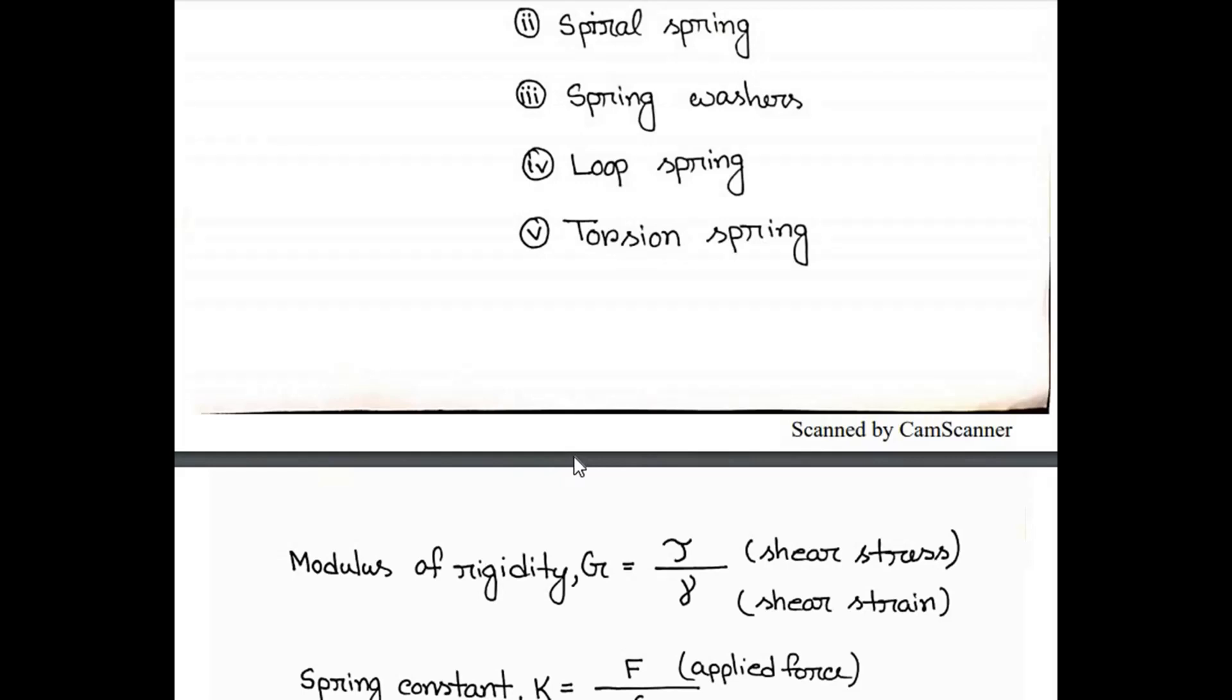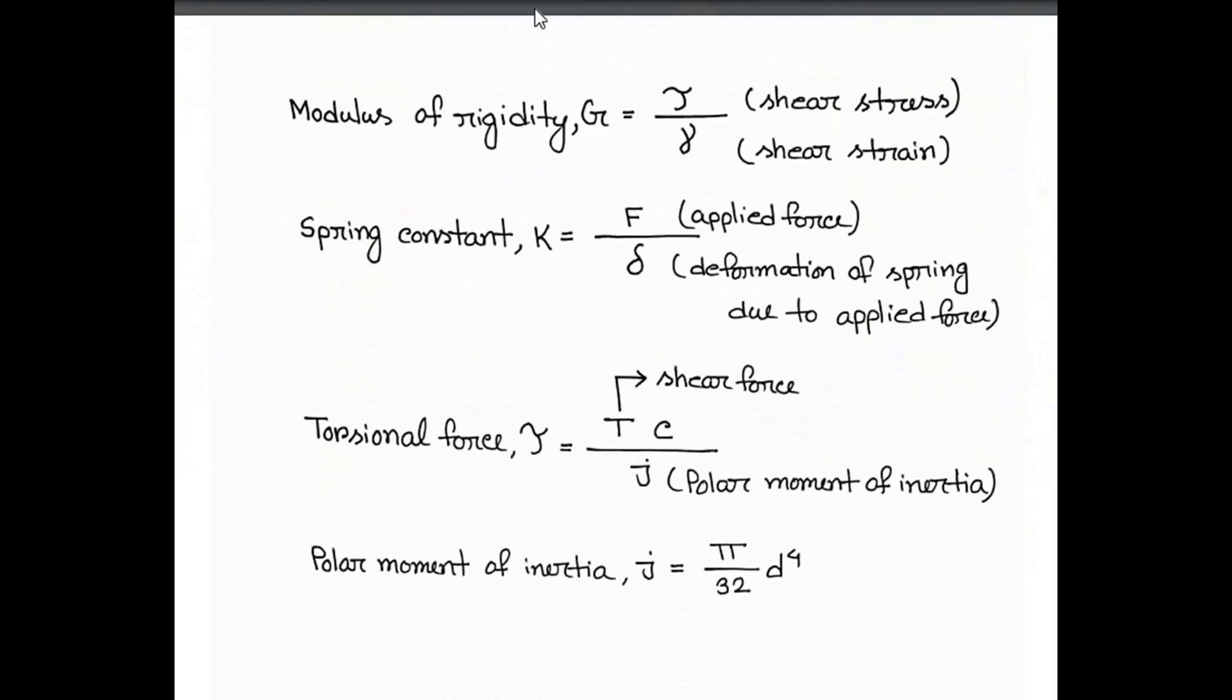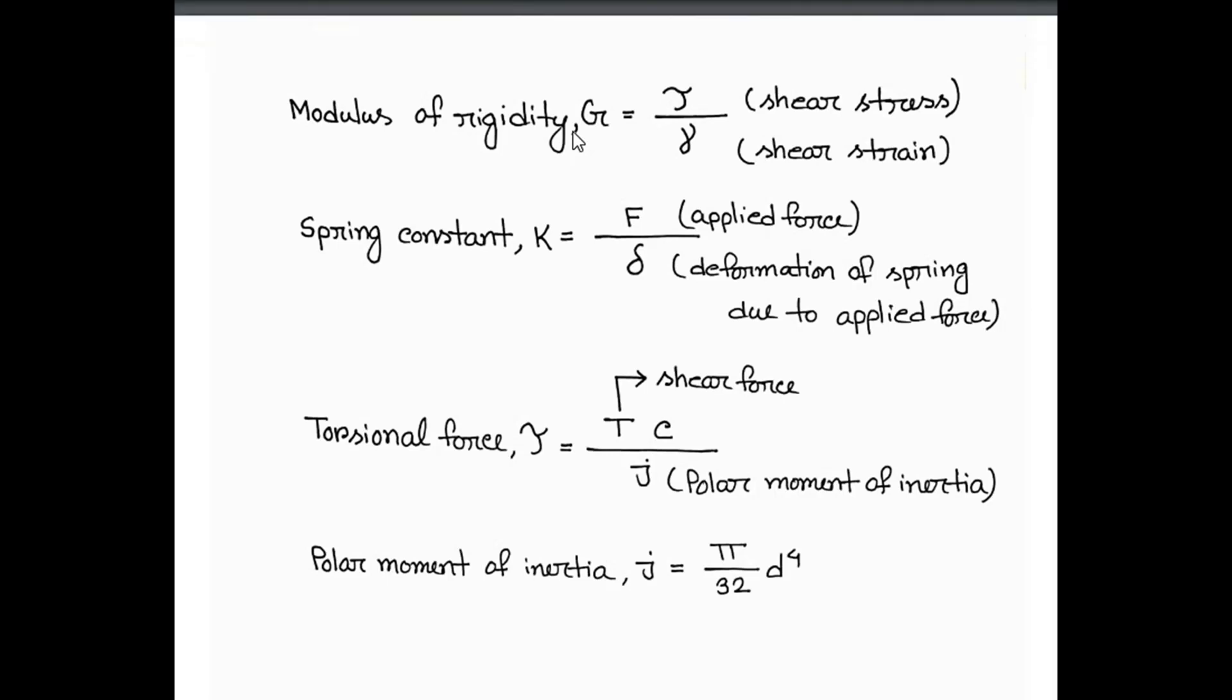Let's move to another important topic. Modulus of rigidity G equals tau by gamma, where tau denotes shear stress and gamma denotes shear strain. Spring constant K equals applied force divided by the deformation of spring due to applied force, which is delta.